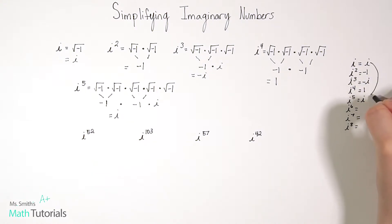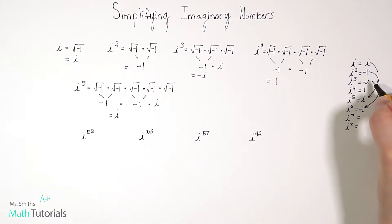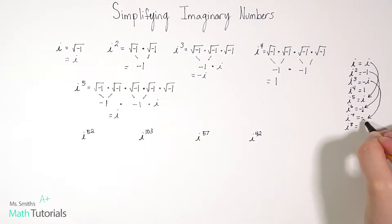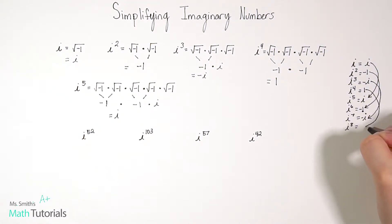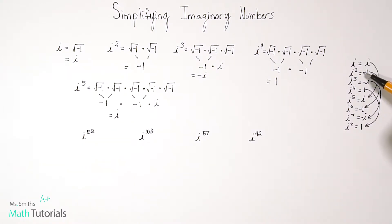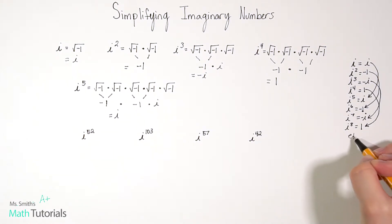So the pattern is: i to the first is i, i squared is negative one, i cubed is negative i, and i to the fourth is positive one. Then i to the fifth is just i again — the pattern repeats. i to the sixth is negative one, i to the seventh is negative i, i to the eighth is one. The pattern of i, negative one, negative i, one just keeps repeating and doesn't stop at eight — it goes on forever.